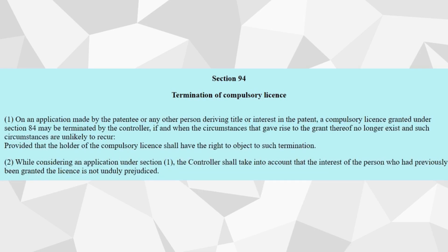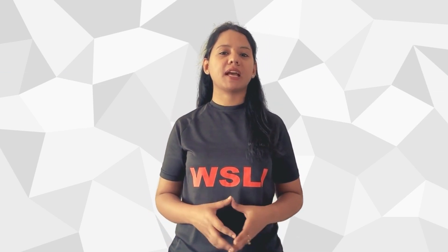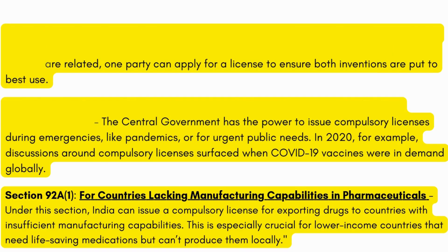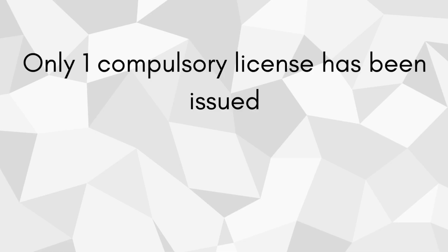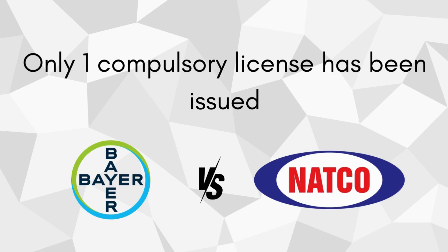Other terms and conditions for termination of a compulsory license can be found in section 94. A compulsory license can be a life-saving mechanism for public health, but there are certain special conditions under which compulsory licenses can be issued. Till date, only one compulsory license has been issued in India, under the Natco Pharma versus Bayer case. To understand the details of this case, I will leave a link to the document in the description below.